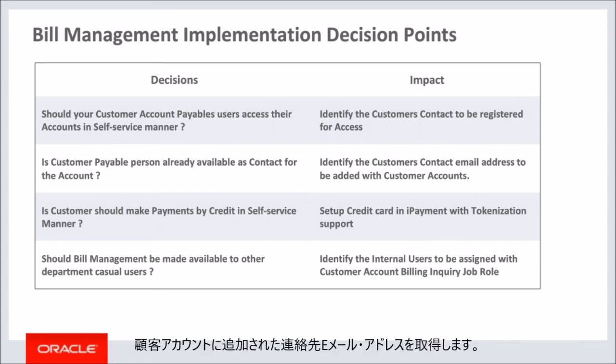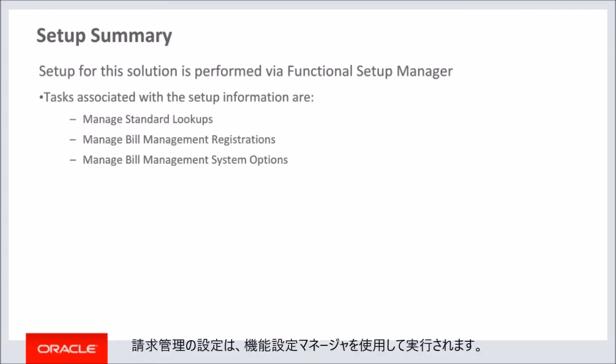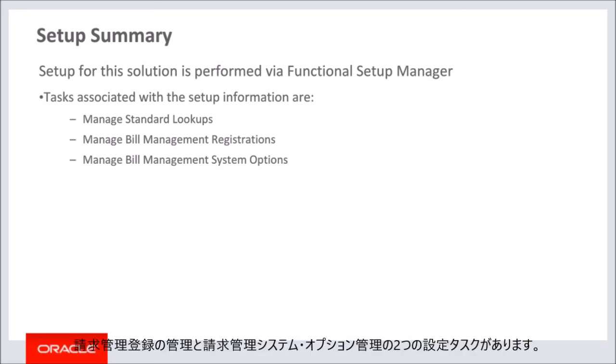Get the contact email address added to the customer account. If the customer is allowed to make credit card payments in bill management, ensure tokenization support is enabled. The setup for bill management is performed by a functional setup manager. There are two sets of tasks: Manage Bill Management Registration and Manage Bill Management System Options.